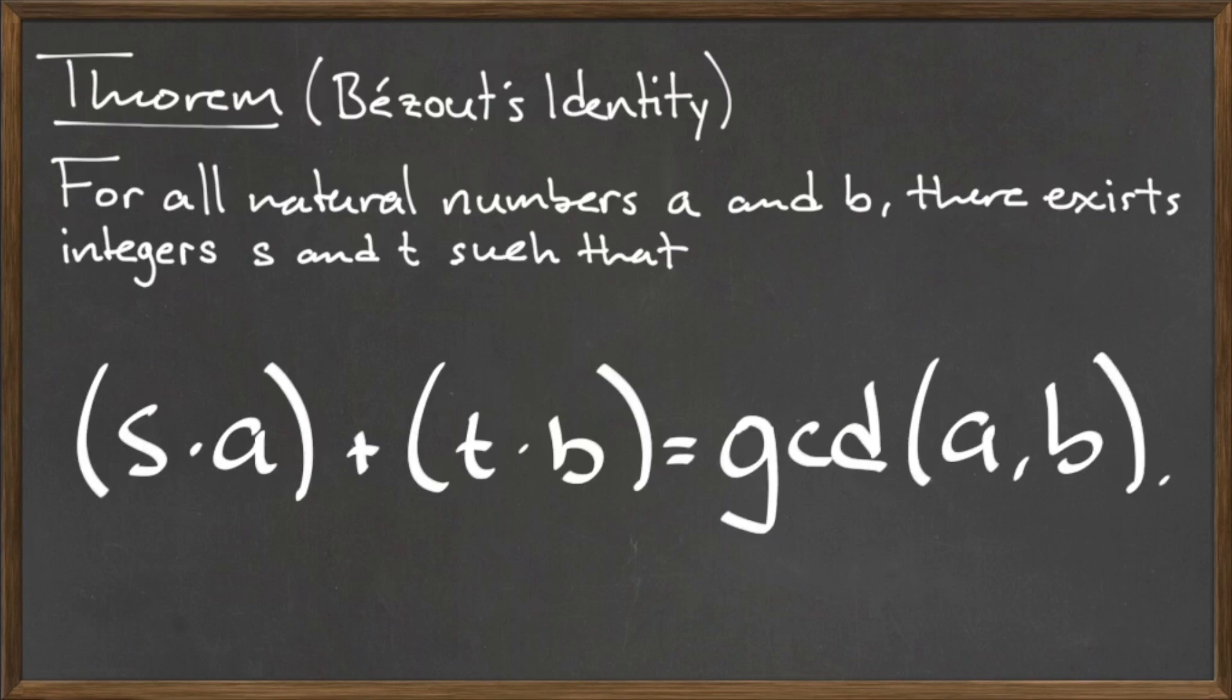Bézout's identity states that for all natural numbers a and b, there exist integers s and t, such that the quantity s times a plus the quantity t times b is equal to the gcd of a and b.